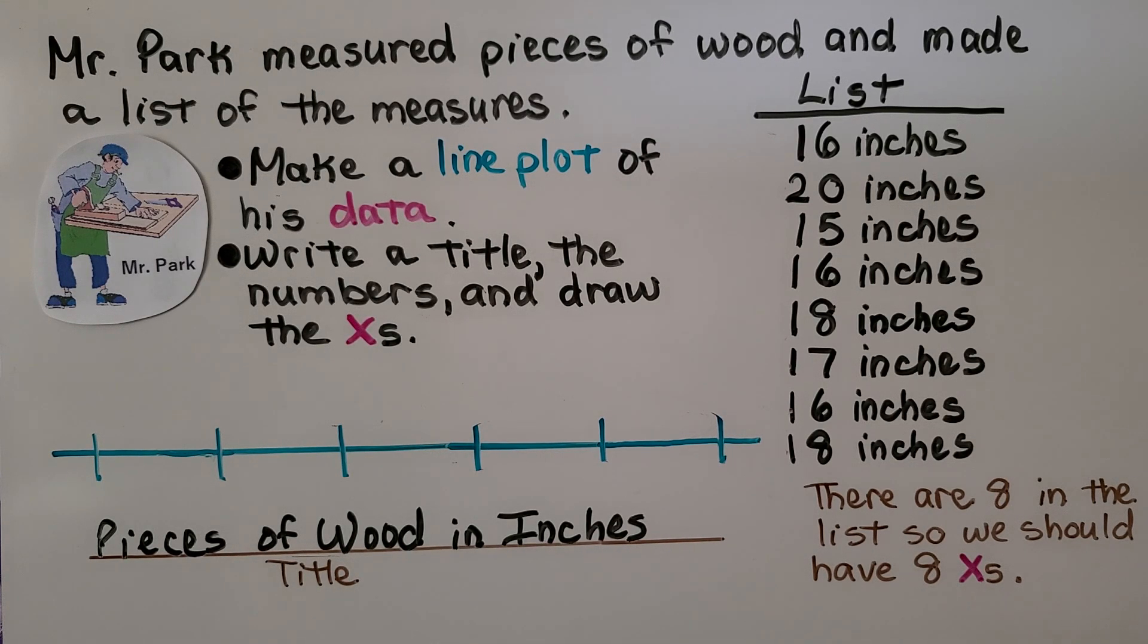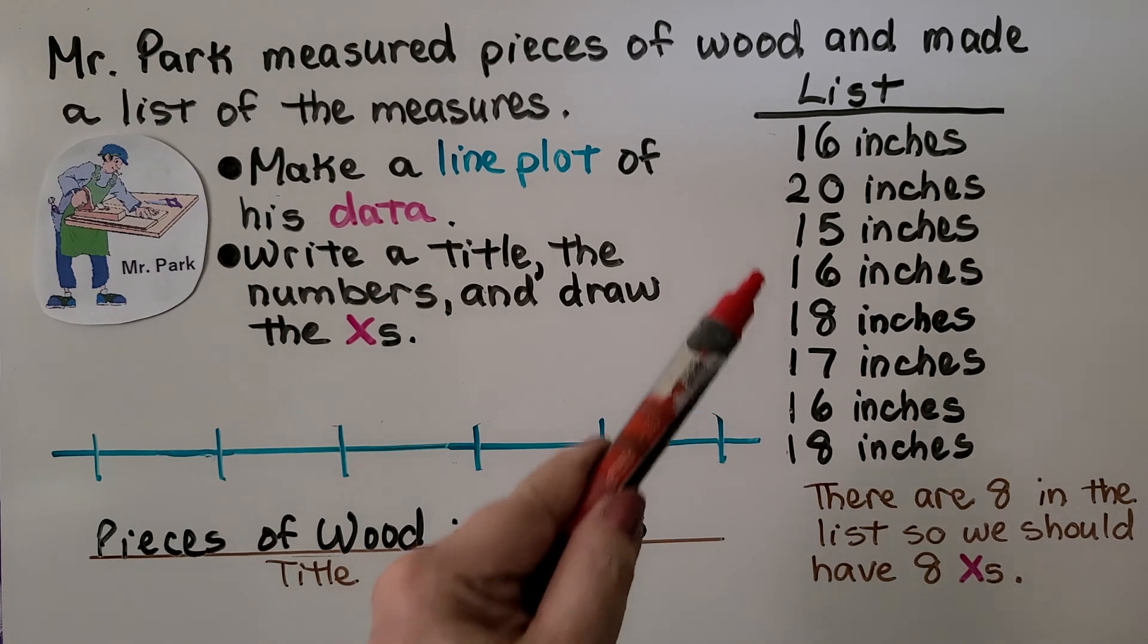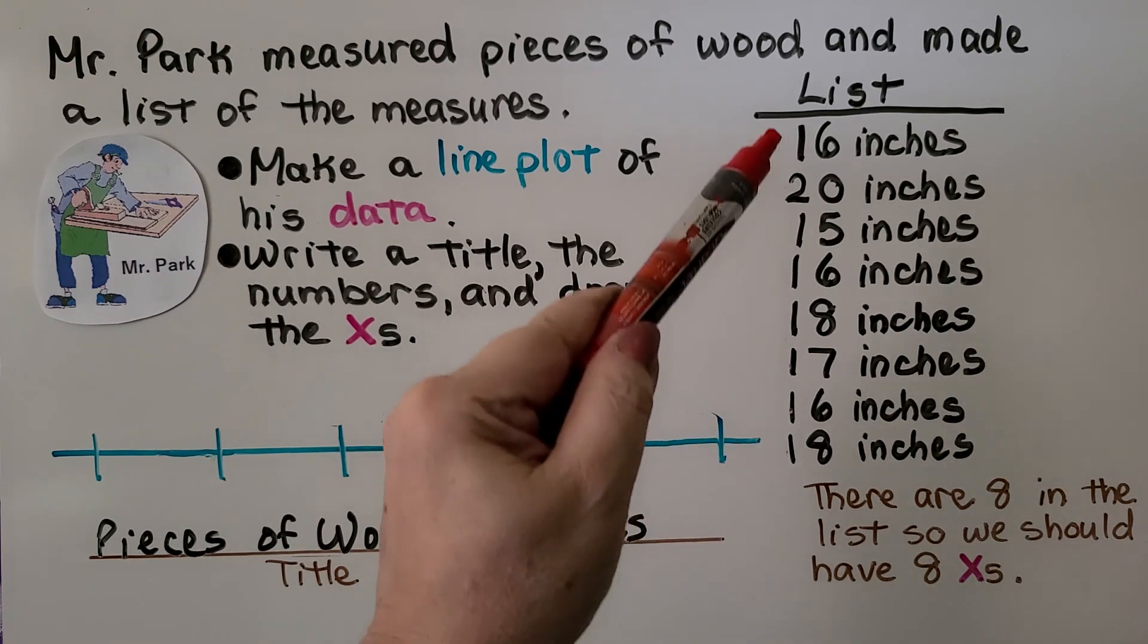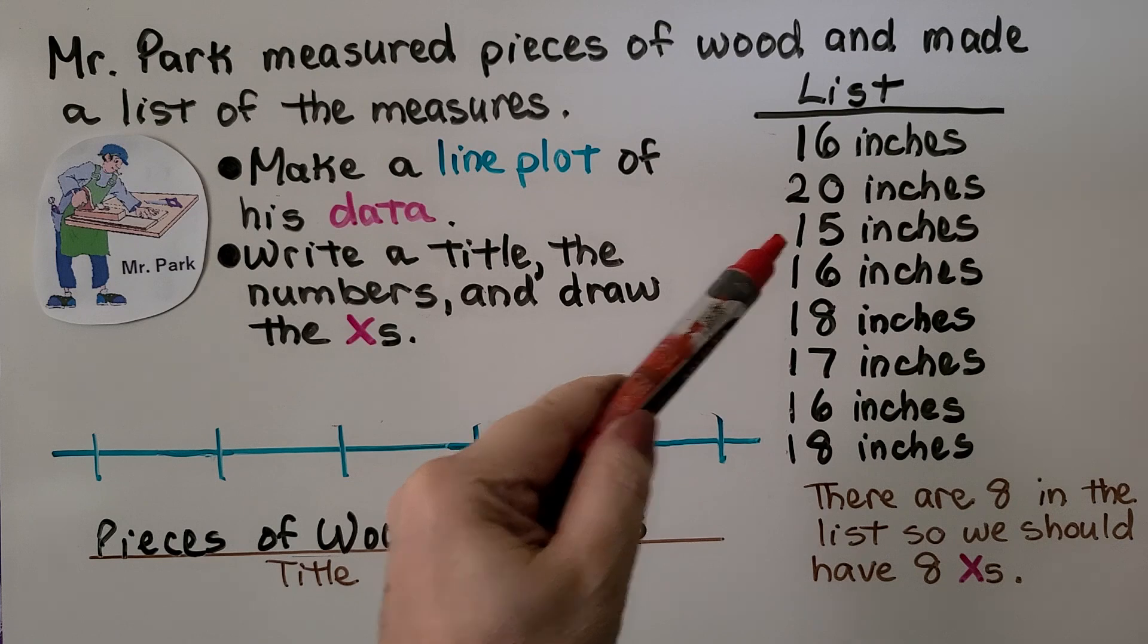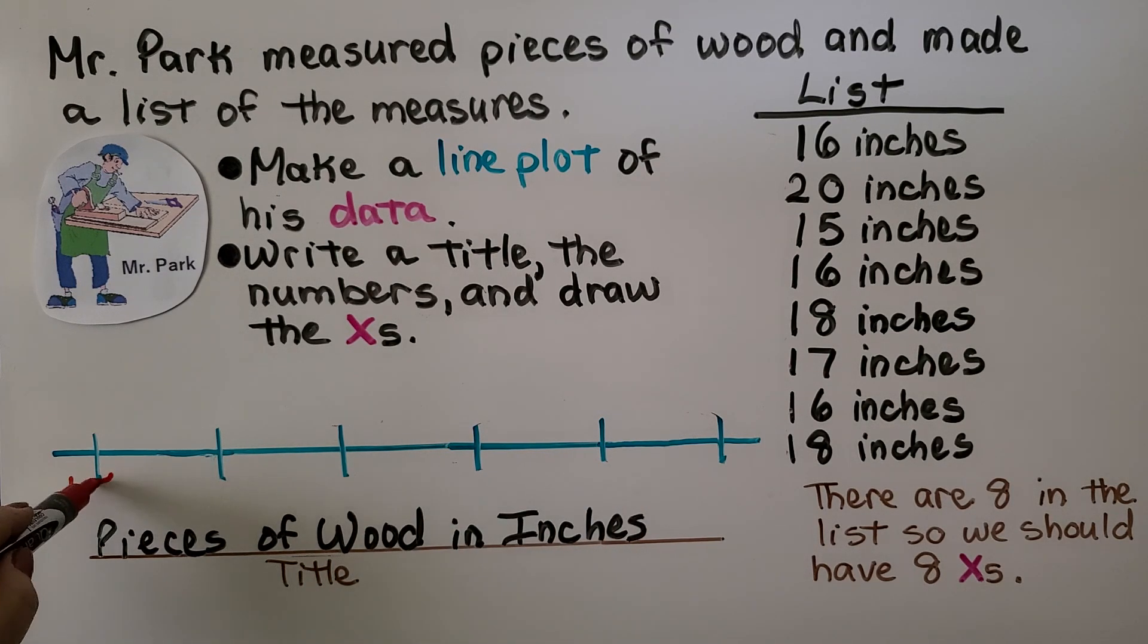Now the next thing we do is write the numbers. We look for the least number. The least number would be 15. So that's going to be the first number we write. We need to write them in order from least to greatest, listing all the numbers.